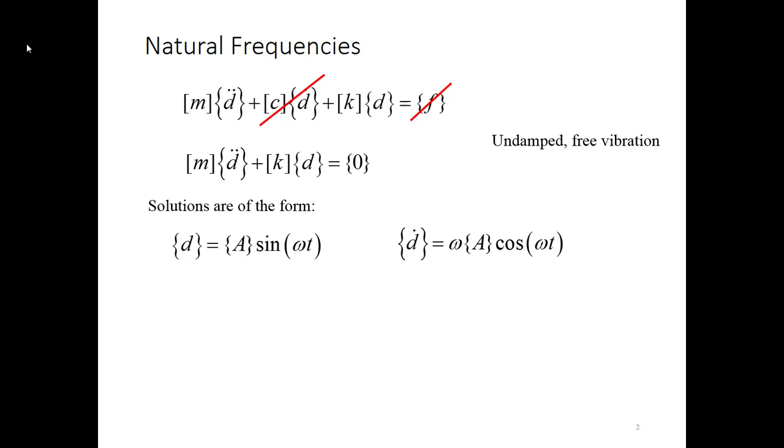Now if we take that D expression and we take the derivative with respect to time, we're going to get omega A cosine omega t. And then we take another derivative, we get minus omega squared A sine omega t. But notice that A sine omega t was the original displacement. So that means that the second derivative of the displacement, or degree of freedom vector, is minus omega squared times the degree of freedom vector. So that means our equation of motion simplifies to this expression.